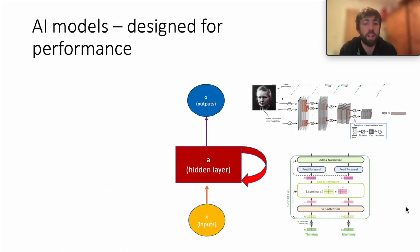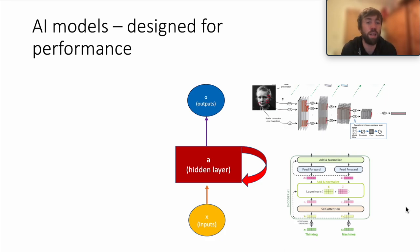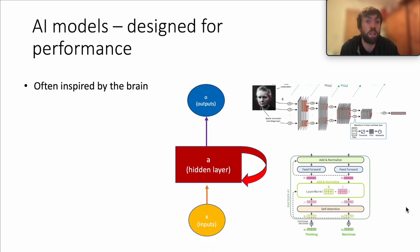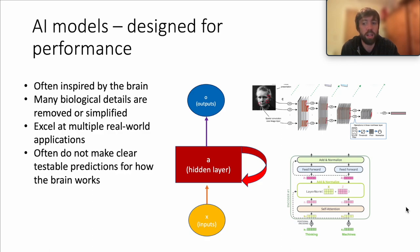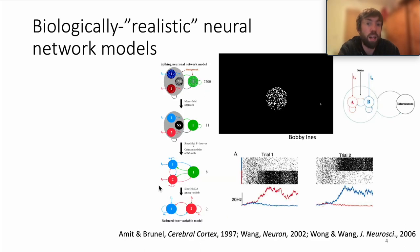AI-type models are really designed for performance. The goal is to learn to classify images or translate some text as well as possible, and it doesn't really matter for AI engineers whether the solution is similar to how the brain performs that task or completely different. These models are often inspired by the brain but have many biological details removed or simplified, and many excel at real-world applications. But if we're interested in understanding how the brain works, it's often not clear how to make testable predictions using these models to advance neuroscience.